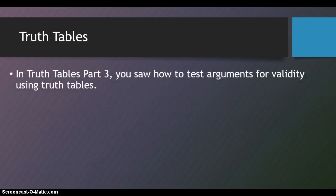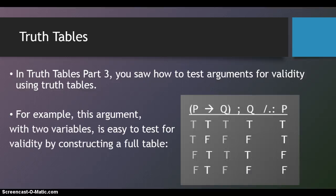In Truth Tables, Part 3, you saw how to test arguments for validity using truth tables. For example, this argument, with two variables, is easy to test for validity by constructing a full table.